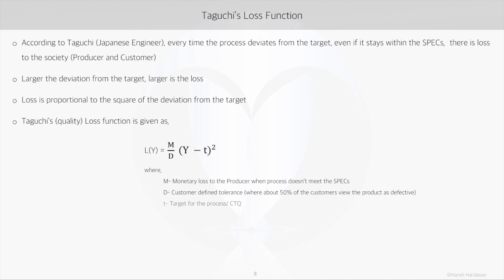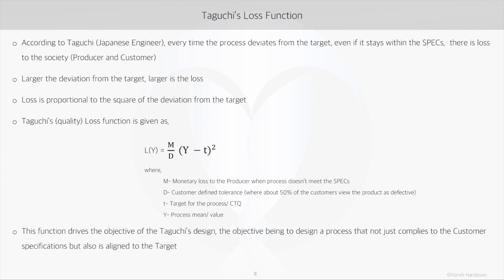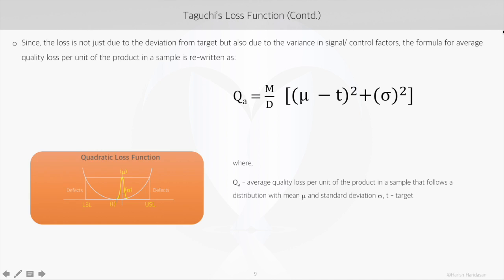This quality loss is proportional to the square of the deviation of the mean from the target, shown as t here, where y is the process mean. The function has m by d as a constant, where m is the monetary loss to the producer when the process goes beyond the specs, and d is the tolerance where about 50% of the customers view the product as defective. Now this quality loss is not just due to the deviation from target, but variation in the model also plays a significant role.